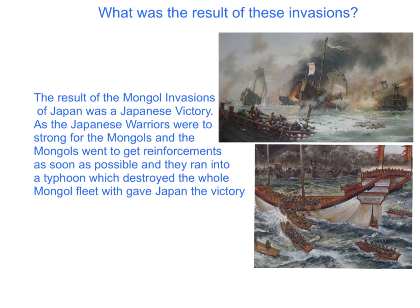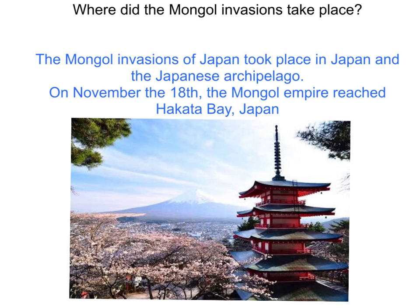Where did the Mongol invasions of Japan take place? The Mongol invasions of Japan took place in Japan and the Japanese archipelago. On November the 18th, the Mongol Empire reached Hakata Bay, Japan.